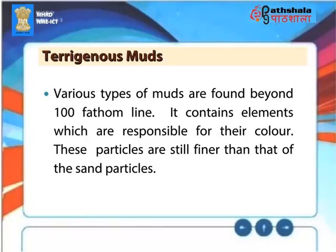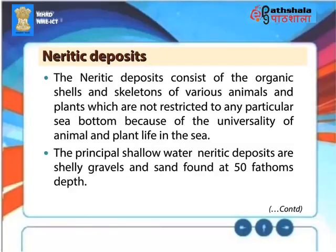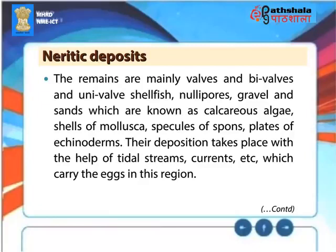Terrigenous muds are found beyond the 100-fathom line. They contain elements responsible for their color, and these particles are still finer than sand particles. The neritic deposits consist of the organic shells and skeletons of various animals and plants, which are not restricted to any particular sea bottom because of the universality of animal and plant life in the sea. The principal shallow water neritic deposits are shelly gravels and sand found at 50 fathoms depth. The remains are mainly valves of bivalve and univalve shellfish, nullipores, calcareous algae, shells of mollusks, spicules of sponge, and plates of echinoderms. Their deposition takes place with the help of tidal streams and currents.